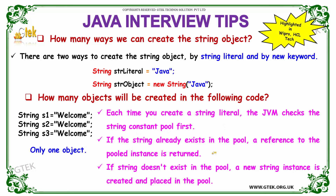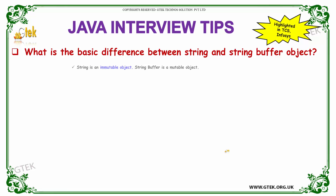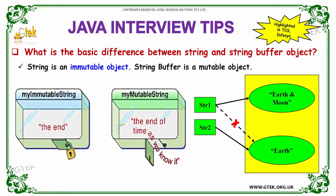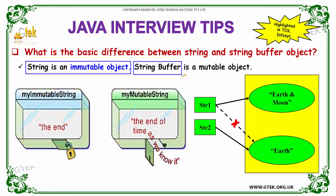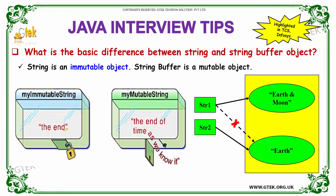These types of questions are highlighted in interviews of Wipro and HCL Technologies. The next question is: what is the basic difference between String and StringBuffer? String is an immutable object, whereas StringBuffer is a mutable object. Immutable means you can't change it once you create it, whereas StringBuffer can be changed or altered after creation.